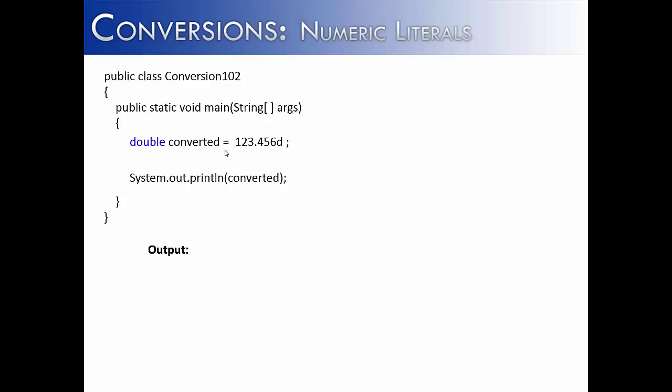Lastly, you can represent a real number as a double by adding a D at the end. And so the output would be 123.456, and you wouldn't see that D anywhere.